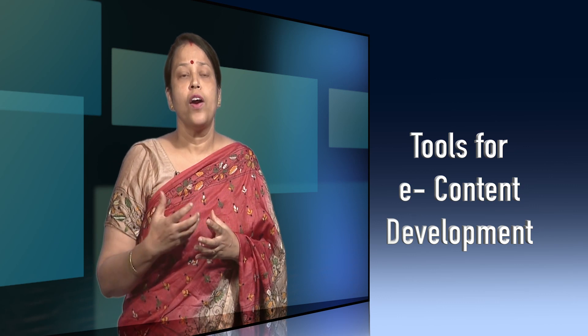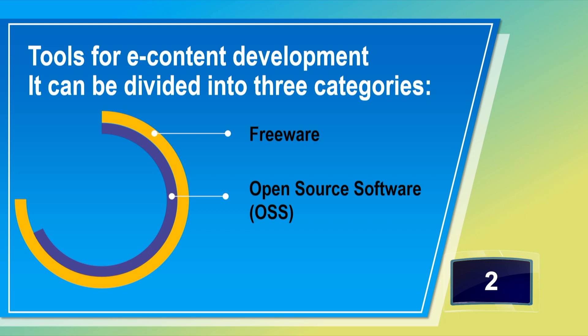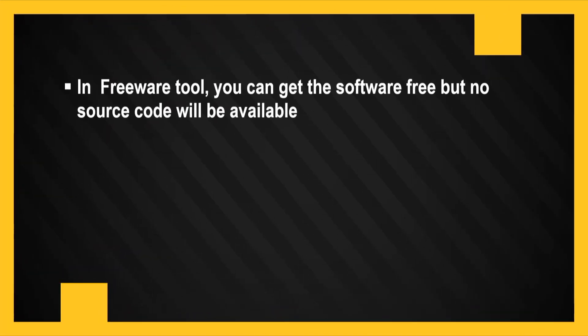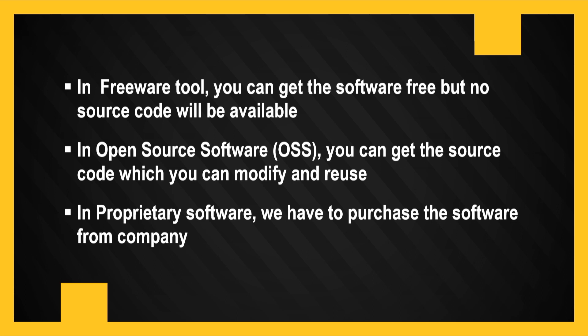Regarding tools for e-content development, they can be divided into three main categories. The first is freeware tools — you can get the software free, but no source code is available. The second is open source software tools — you can get the source code so that you can modify and reuse it. The third is proprietary software tools — you have to buy or purchase those tools from a company.